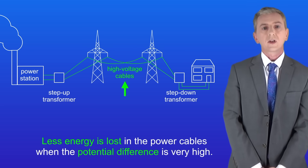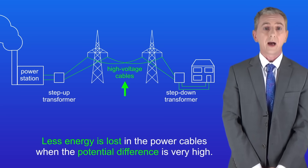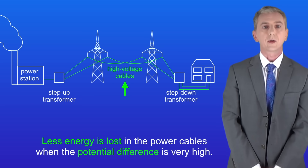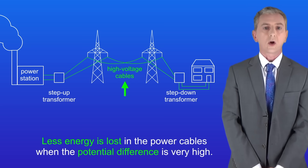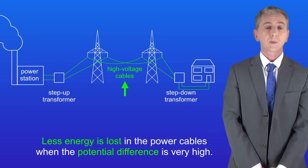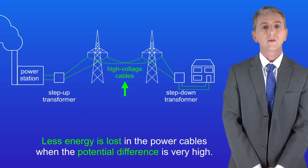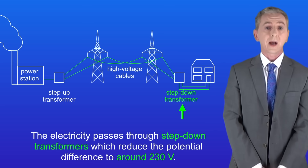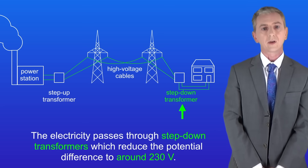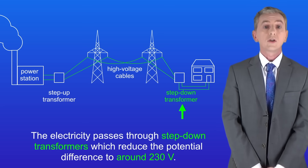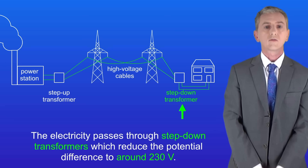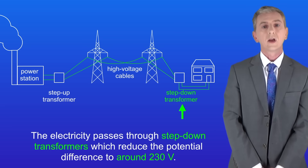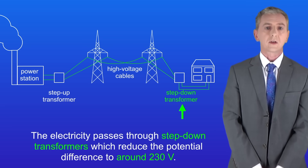The electricity now passes through high voltage cables, but this can't be passed onto homes because the potential difference will be far too high. So finally, the electricity passes through step down transformers and they reduce the potential difference to around 230 volts, and this is then passed into homes.